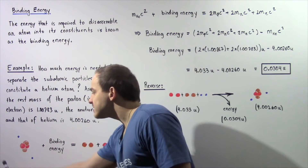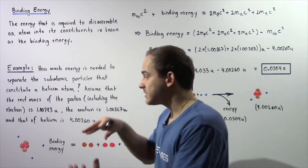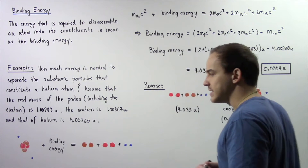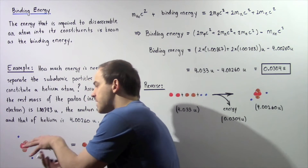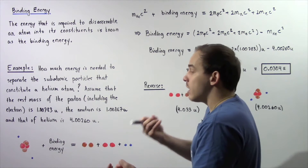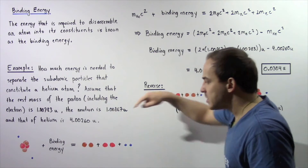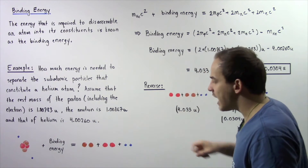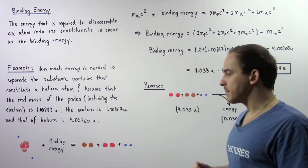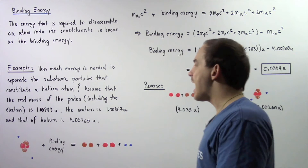We have the rest mass energy of our helium atom, which is composed of two protons, two neutrons found in the nucleus, and two electrons found outside orbiting that nucleus. If we take the rest mass energy of that helium atom and add the binding energy — the mechanical energy input to break that atom — we will produce the following constituents: two neutrons, two protons, and two electrons. The rest mass energy of all these individual subatomic particles is equal to the binding energy plus the rest mass energy of our helium.